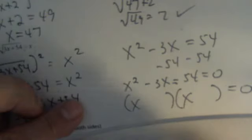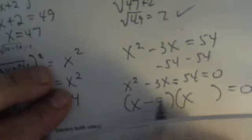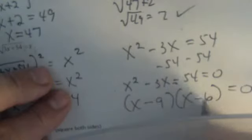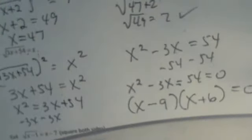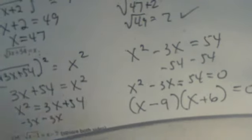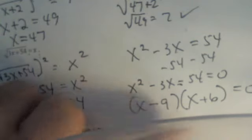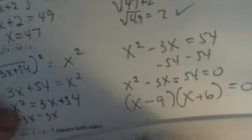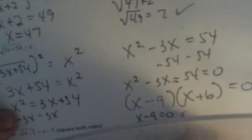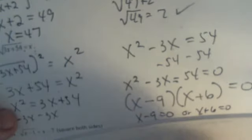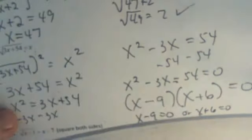And I know if 9 times 6 is 54, 9 times 6 is 3, but since I have negative 3 here, I need to have more negative than I do positive. Then, when I solve, I use my zero product property, and I get x is 9 or x is negative 6.